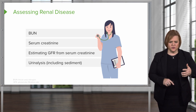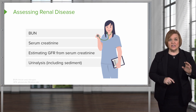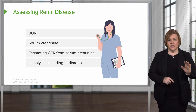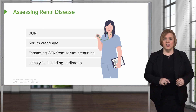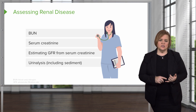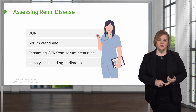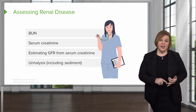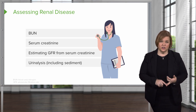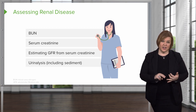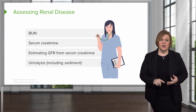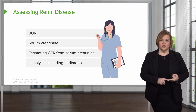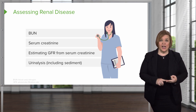I've gone through those a couple of times because these are four cornerstone tests that you need to be very familiar with. Does the BUN come from a blood test or a urine test? It's blood — just as the serum creatinine. The estimation of the GFR is a calculation from the serum creatinine, but the urinalysis is actually looking at urine.